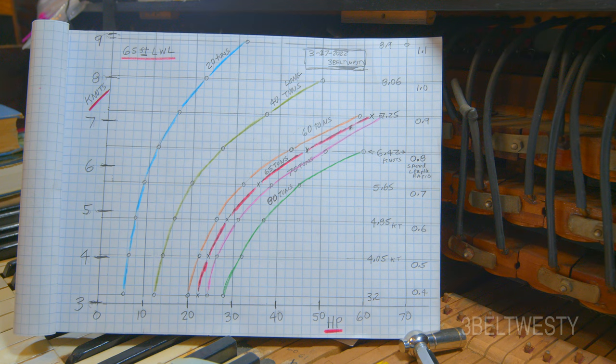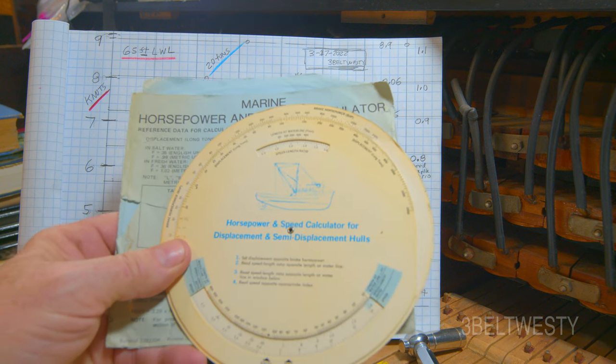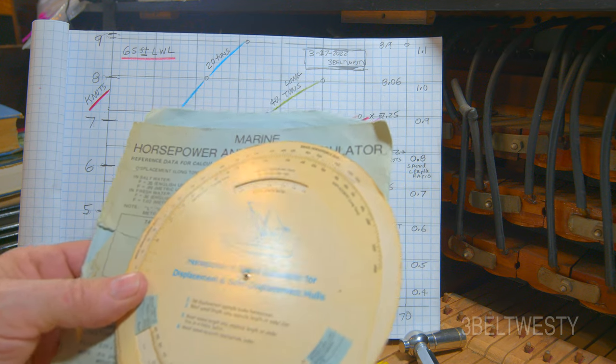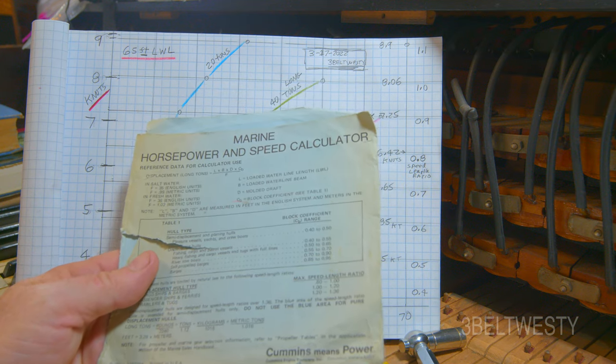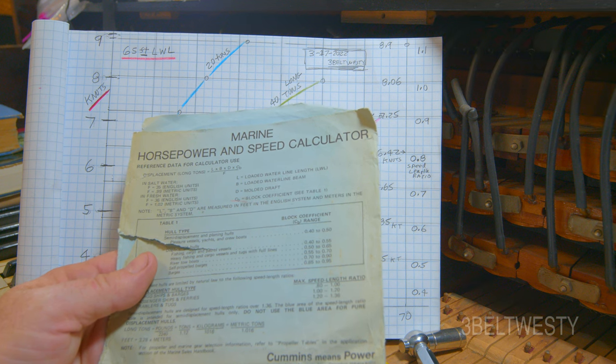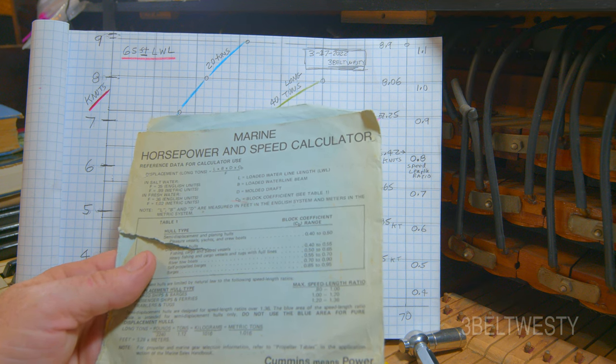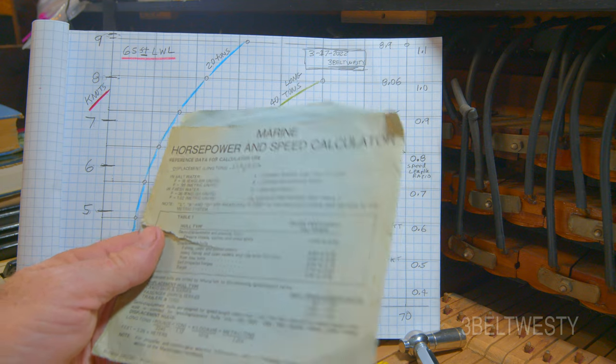Okay, here I want to show just a rough, crude estimate of the speed of SV Seeker versus the power input. What I used here is the old circular slide rule, by Cummins Marine Power. I think this is from about the 60s. This is my dad's, the naval architect.